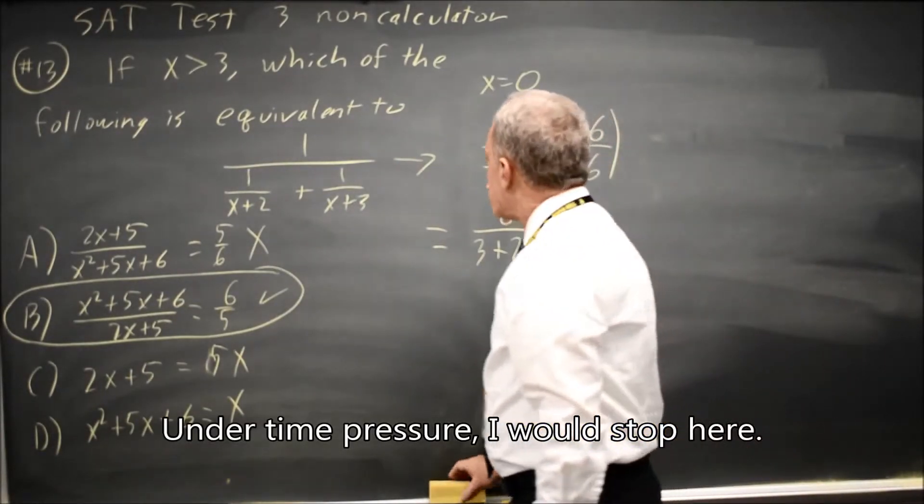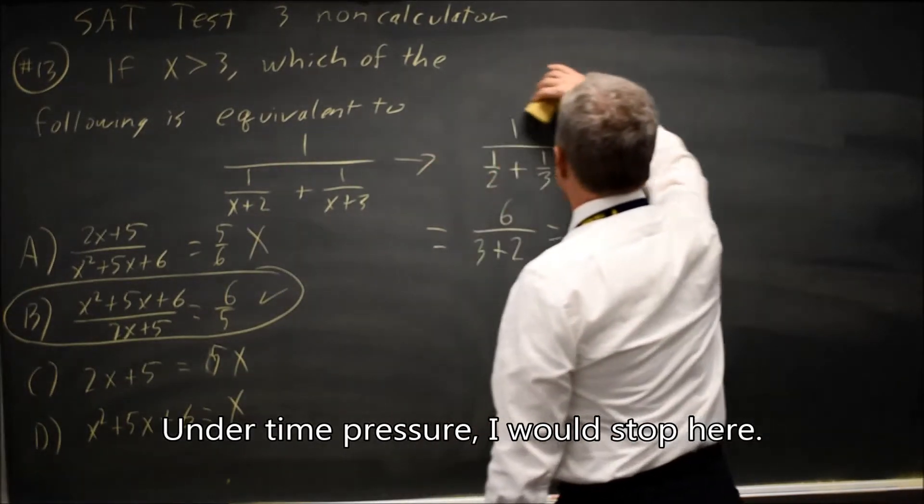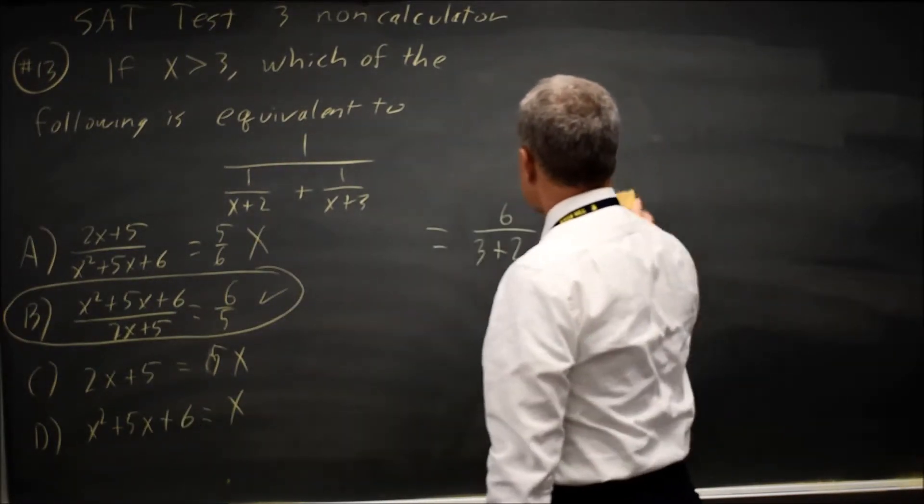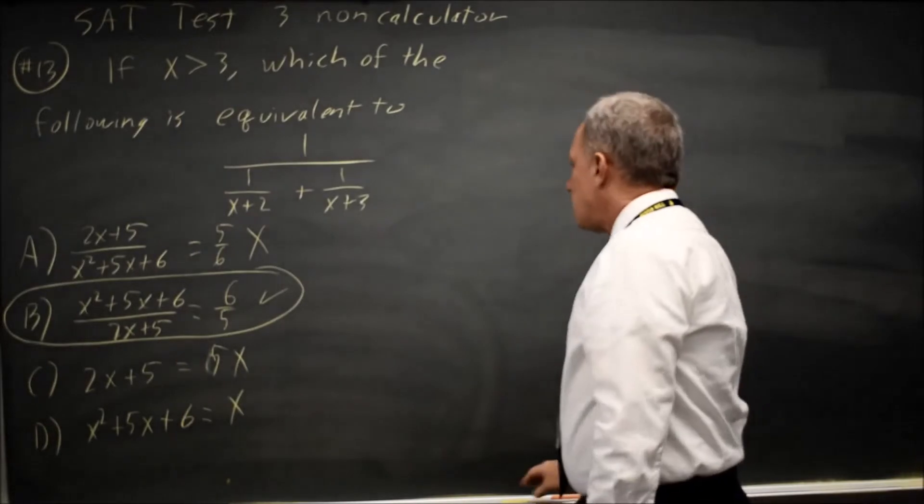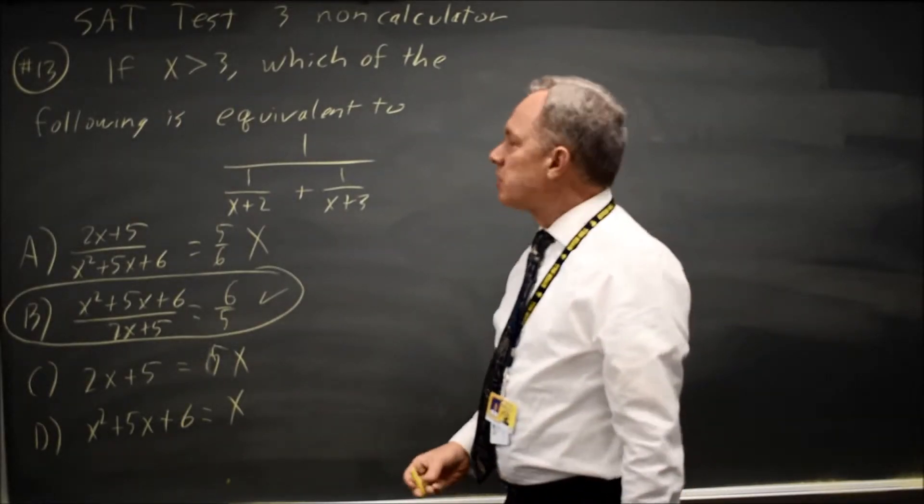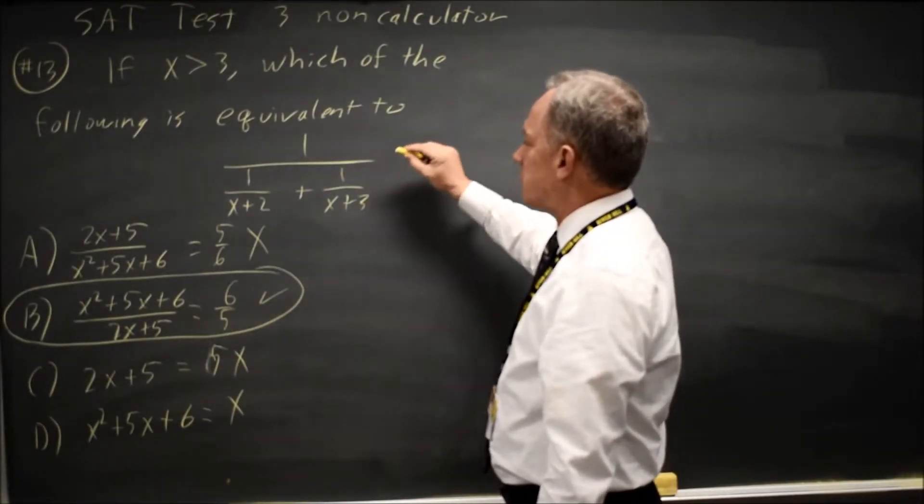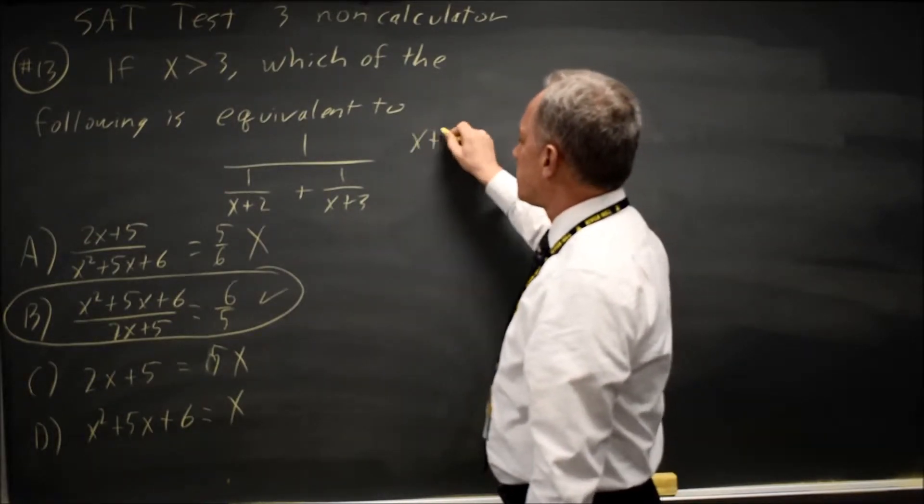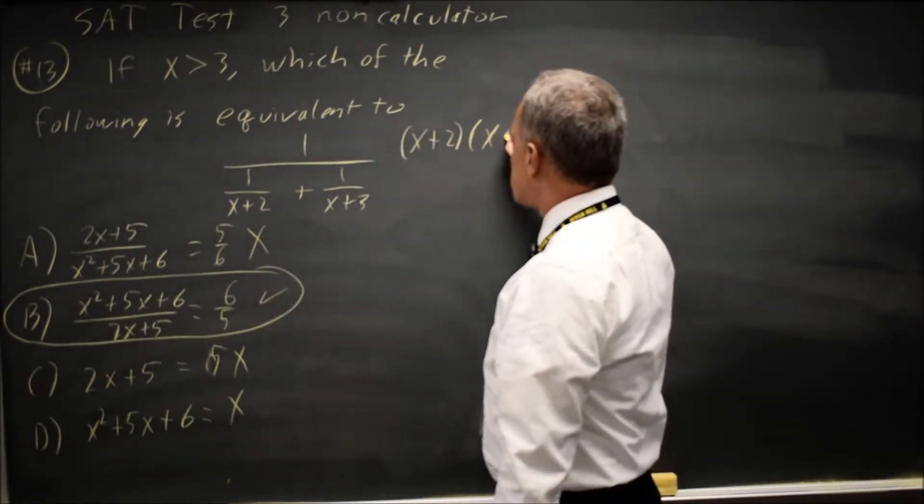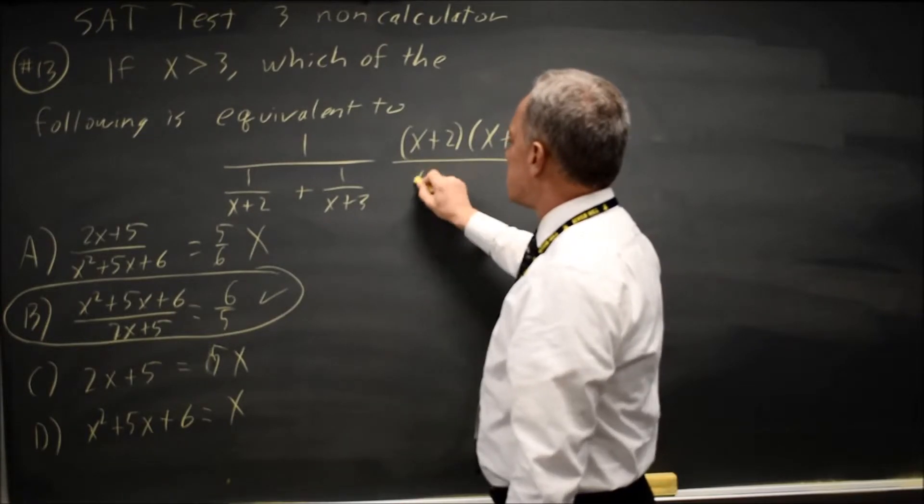Let's try doing the real math, though, just in case you ever need to. What College Board wants you to do instead of multiplying by 6 over 6 is multiply by the least common denominator of these expressions, x plus 2, x plus 3, over itself.